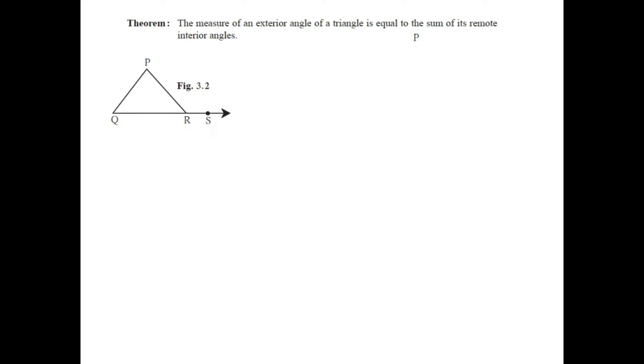Now we have one theorem based on this property. The statement is: the measure of an exterior angle of a triangle is equal to the sum of its remote interior angles. To prove this, consider triangle PQR, where angle PRS is an exterior angle of the triangle.